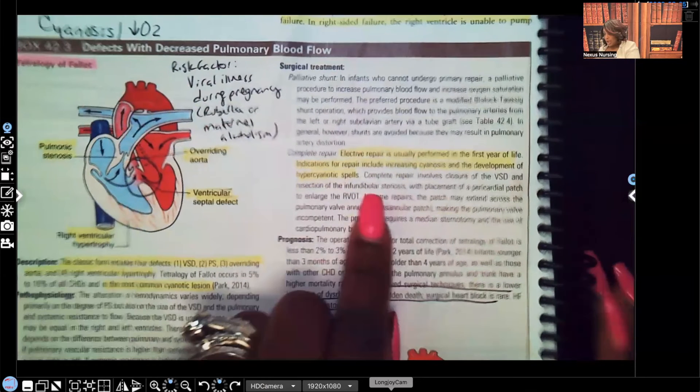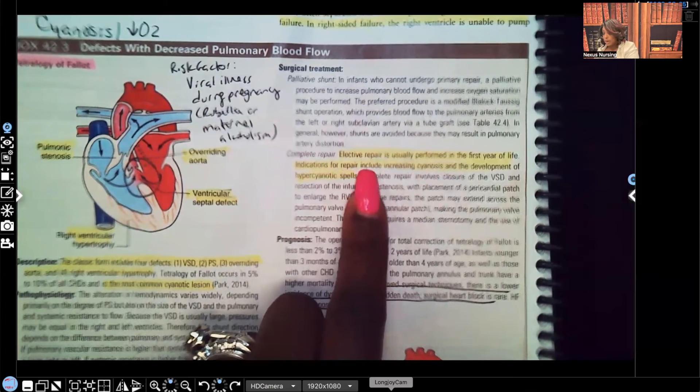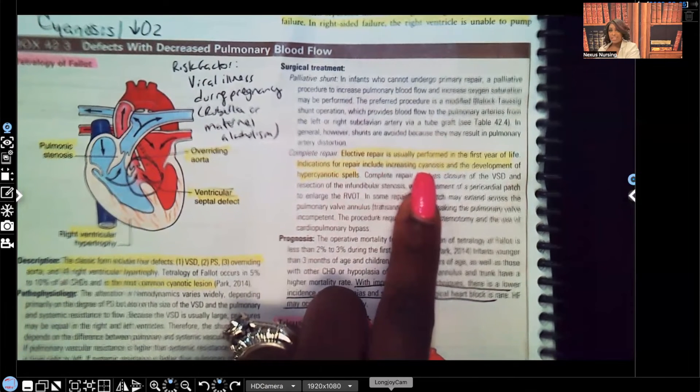Complete repair: Elective repair is usually performed in the first year of life. Indications for repair include increasing cyanosis, so it just gets worse and worse. When you see that word progressive, that means as time goes on it only gets worse. Progressive or increasing cyanosis and the development of hypercyanotic spells.